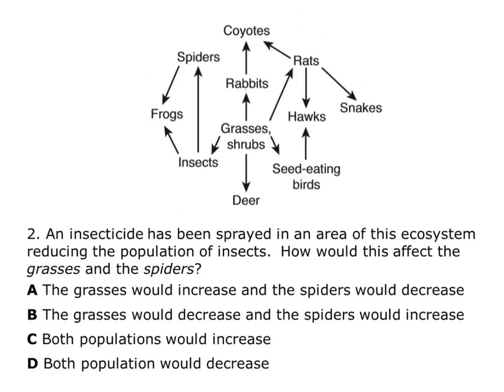Question 2: An insecticide has been sprayed, reducing the population of insects. How would this affect the grasses and the spiders? In front does the same — spiders are down the food chain from insects, so their population would also decrease due to less food. But the grasses, which are behind the insects, would do the opposite: fewer insects means less things eating the grass, so the grass population would increase. The correct answer is A.